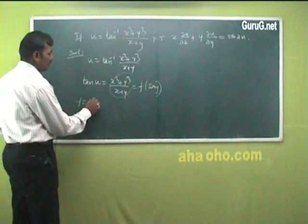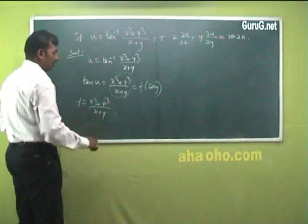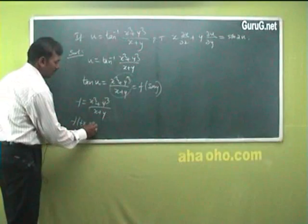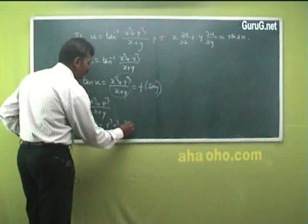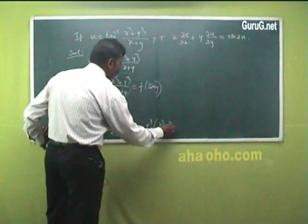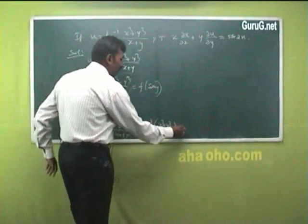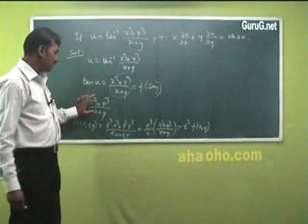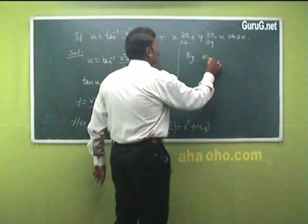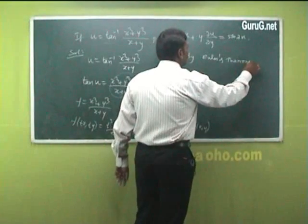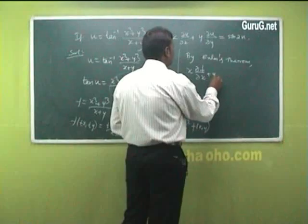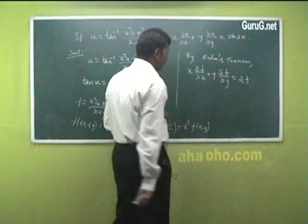Now, is this f a homogeneous function? To find the degree, replace x and y by tx and ty. So f(tx, ty) = (t³x³ + t³y³)/(tx + ty). Taking t outside: t³(x³ + y³) / t(x + y) = t²·f(x, y). So the given function is a homogeneous function of degree 2. By Euler's theorem, since f is a homogeneous function of degree 2, we have x·∂f/∂x + y·∂f/∂y = 2f.